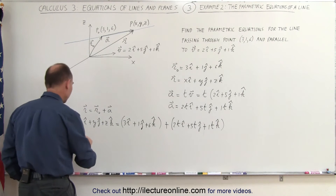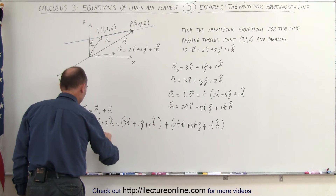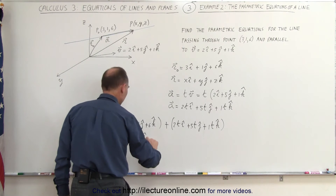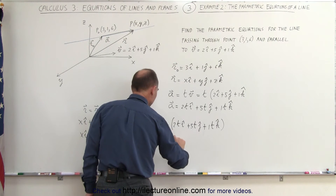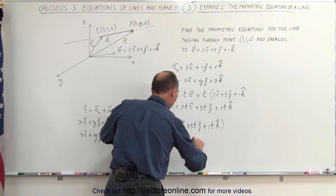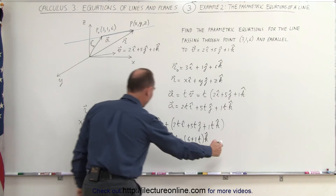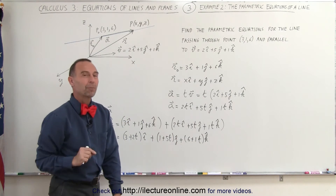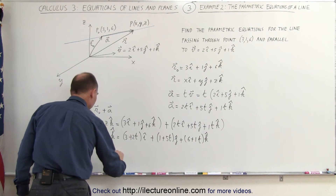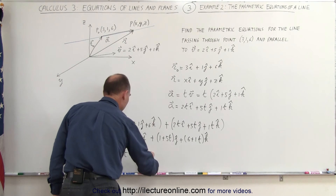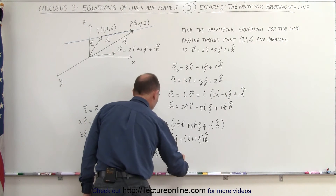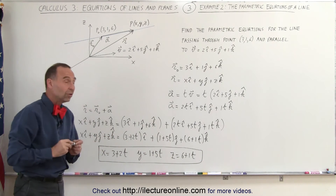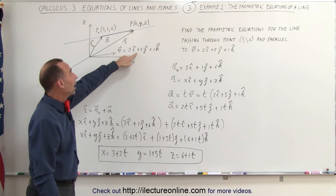Adding those two together, we have x in the i direction, plus y in the j direction, plus z in the k direction, equal to (3 + 2t) in the i direction, plus (1 + 5t) in the j direction, plus (6 + 1t) in the k direction. Since these must be equal, x equals 3 plus 2t, y equals 1 plus 5t, and z equals 6 plus 1t — those are the three parametric equations of this line, which goes through point (3, 1, 6) and is parallel to the vector 2i + 5j + 1k.